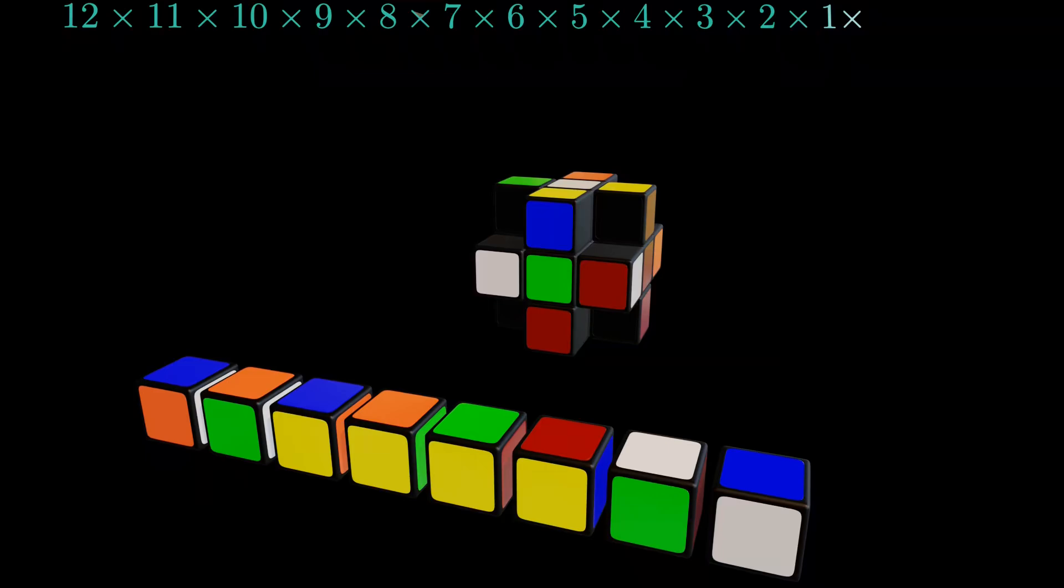But placing these 12 edges is not the end of the story, there is another crucial detail. Each edge piece can be placed in two possible orientations, flipped one way or the other. This means the first edge has two choices and for each choice of the first edge, there will be two more choices for the orientation of the second edge. The same thing is true for the third and all the remaining edge pieces. So for each edge, we have to double the total number of configurations. Therefore, our total count increases roughly 4000 times.